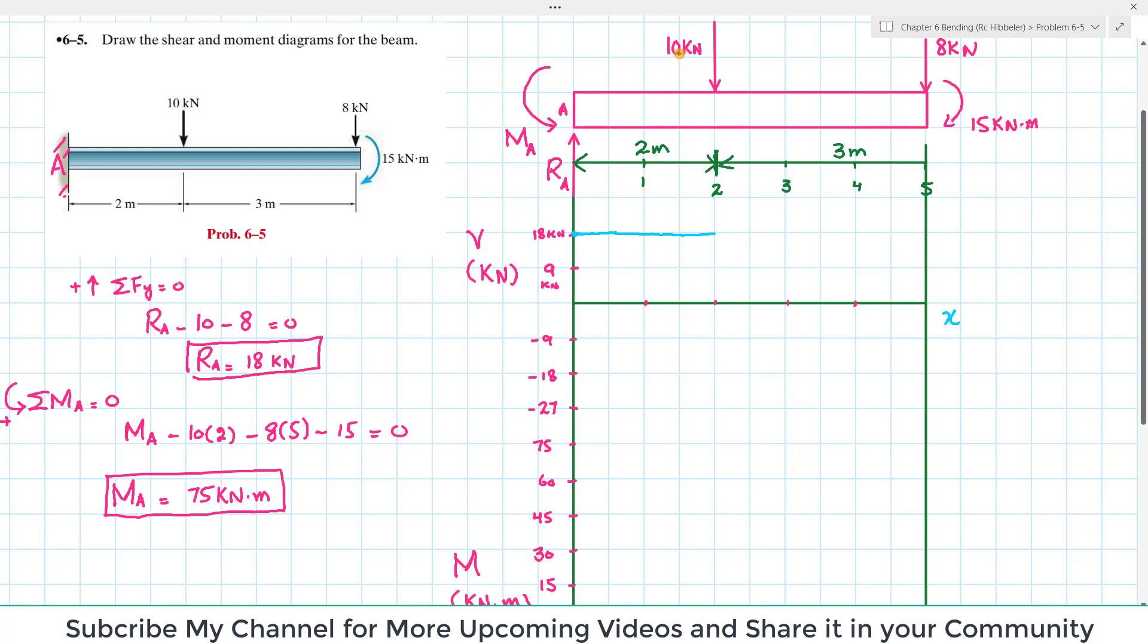At this point there is 10 kN acting downward. 18 minus 10 equals 8, so it will be somewhere here. It will be a vertical line. This is plus 8 because 18 minus 10 is 8.